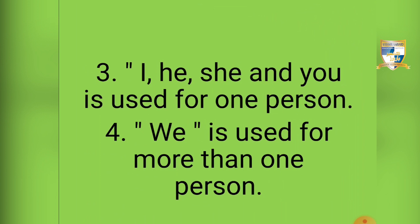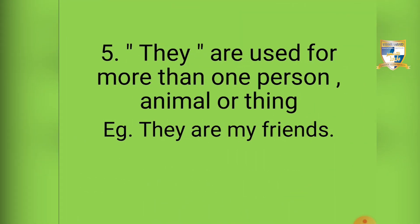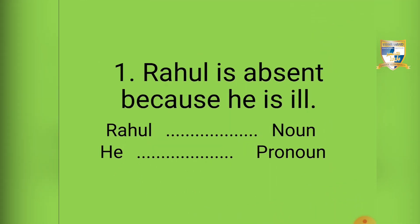Dear kids, 'they' is used for more than one person, animal, or thing. For example: 'They are my friends.' Here 'they' is our pronoun. Now let's look at an example: 'Rahul is absent because he is ill.' The noun in this sentence is Rahul, and we use 'he' in place of that noun, so 'he' is a pronoun here.